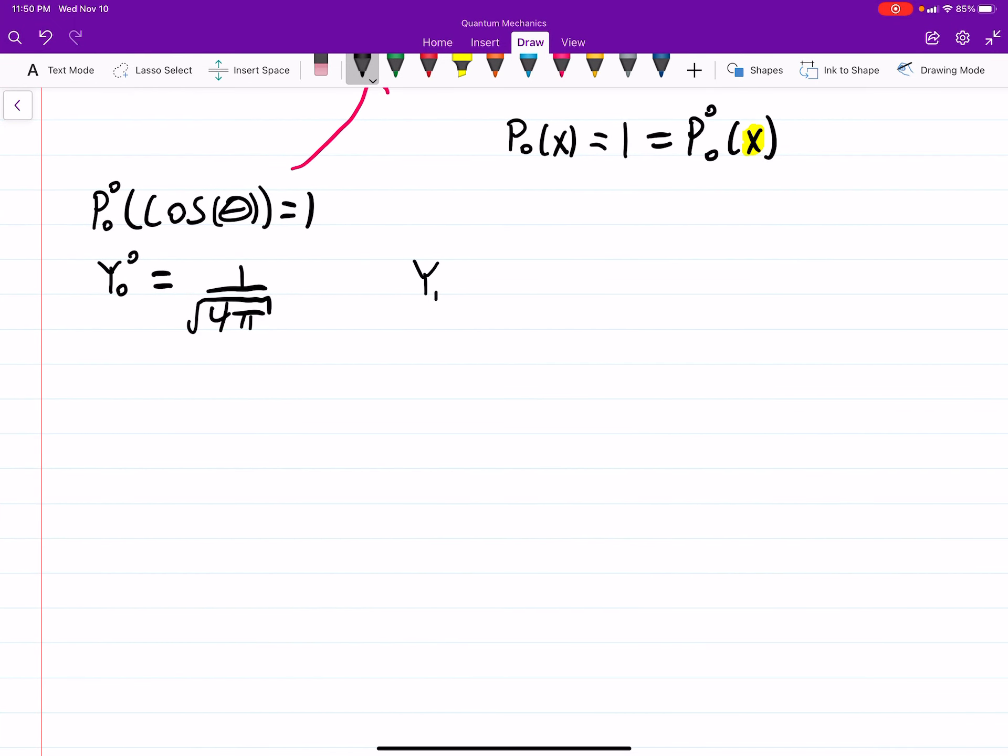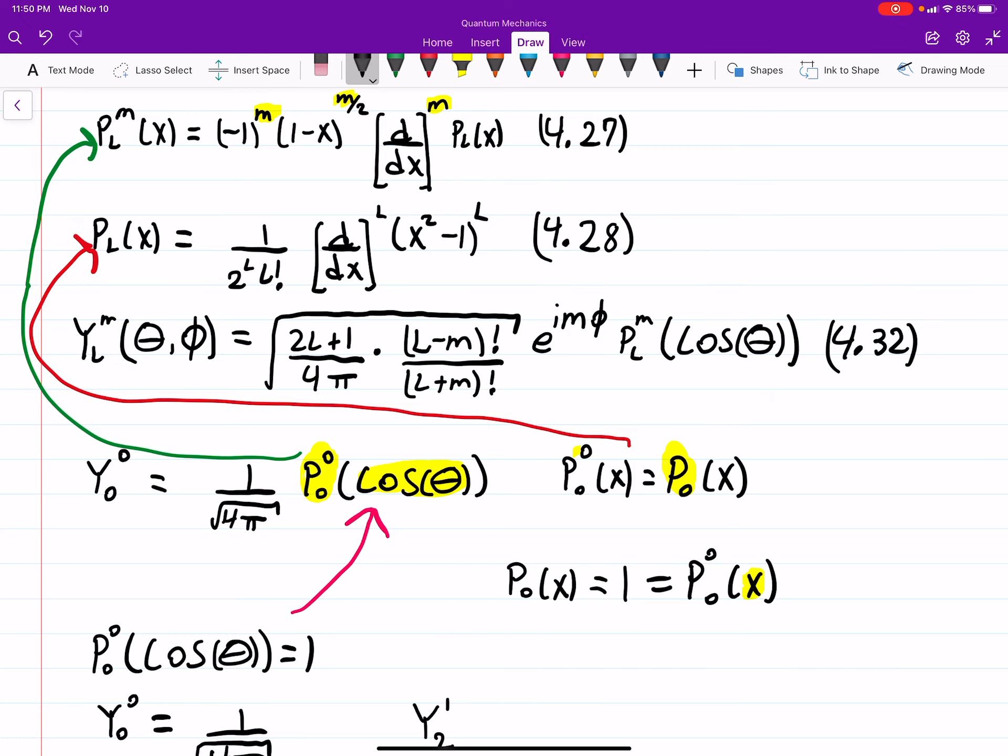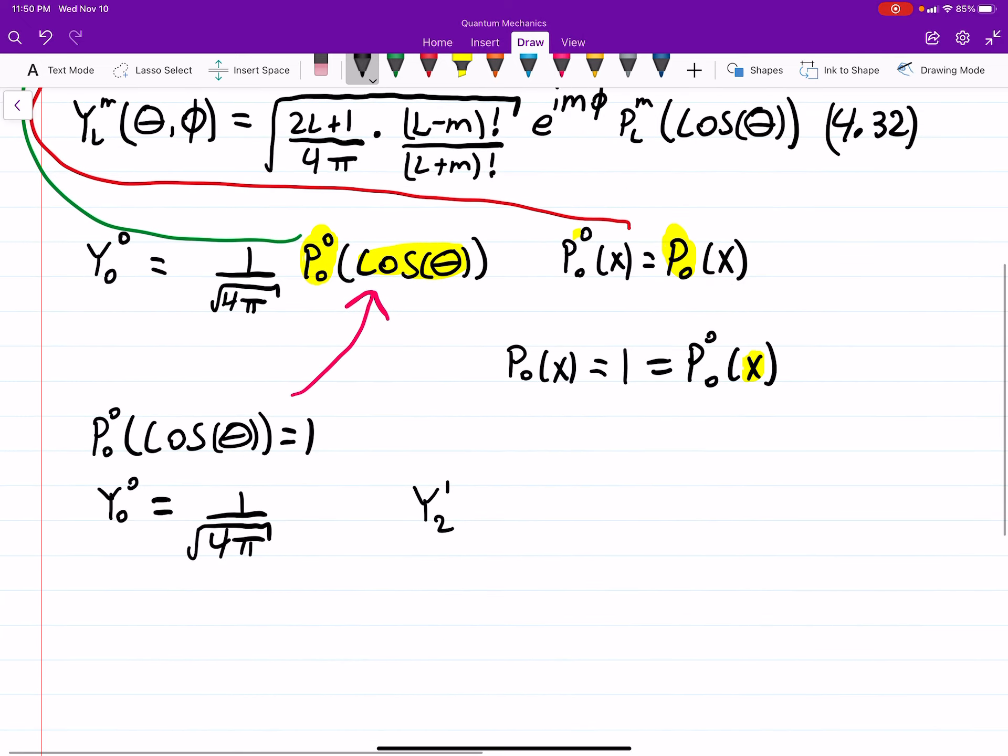If we do, what was it, 2, 1, I think is what they wanted. Same idea basically. You're plugging in, try not to get your numbers confused. If we plug in there, that is the square root of 5 over 4π times 1 over 6 e to the iϕ P₂¹ of cosine theta.